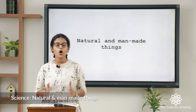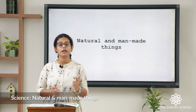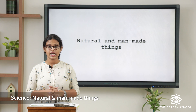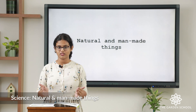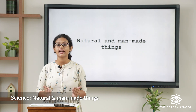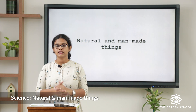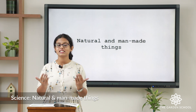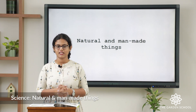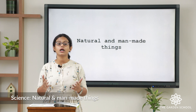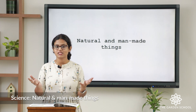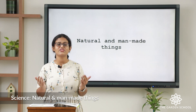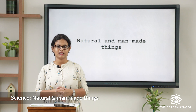Non-living things can be natural and man-made. So what are natural things? Things which are found in nature, things which we get directly from the nature, we call them as natural things. For example, when you look up at the sky, what do you see? You see clouds. Clouds are in the nature — they are the gift of nature. We call them as natural things.